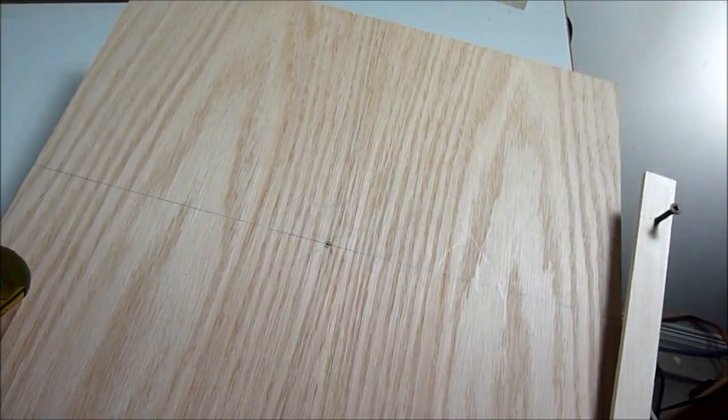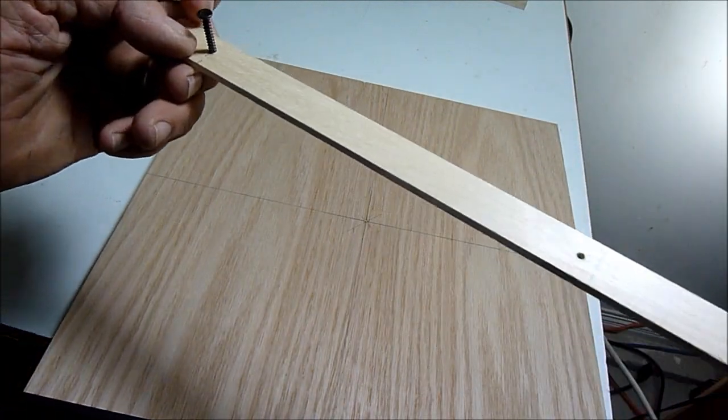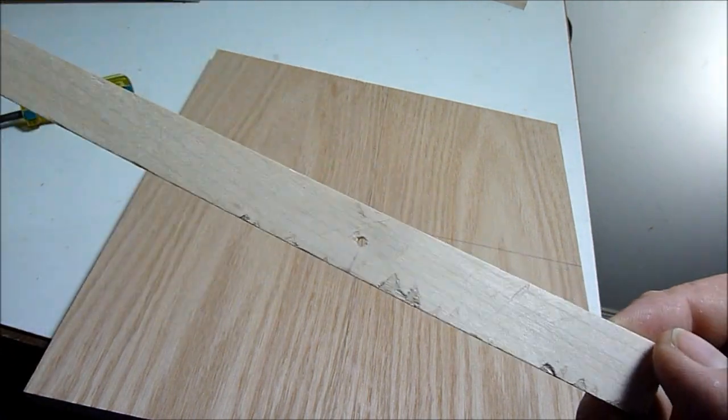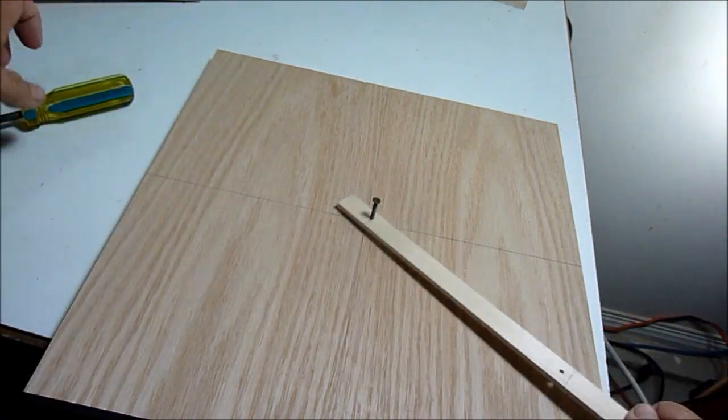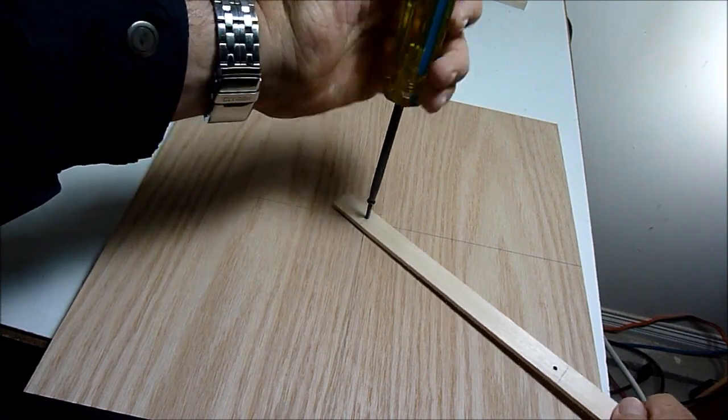Here I have the board all marked. I have the center and I just made this little stick. Drilled two holes in it and this will give me the circle.